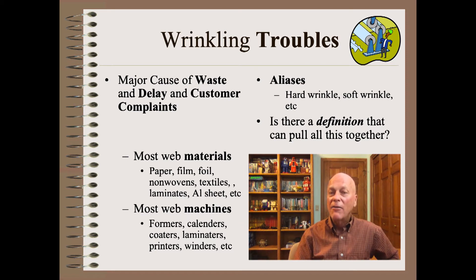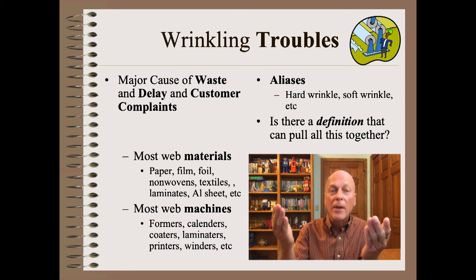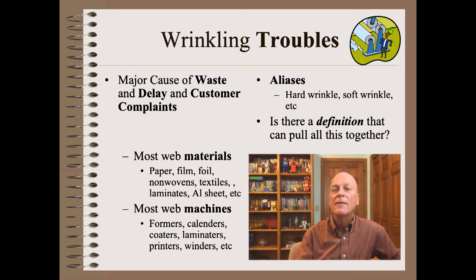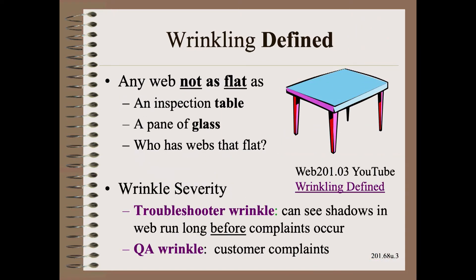We need a definition that will work for all wrinkle types, all webs, and all web machines. So here, we will define wrinkling as any time where the web is not perfectly dead flat, such as on an inspection table or a pane of glass. Of course, no one has webs that flat, but that strict definition avoids the very first barrier to troubleshooting — and that is seeing.